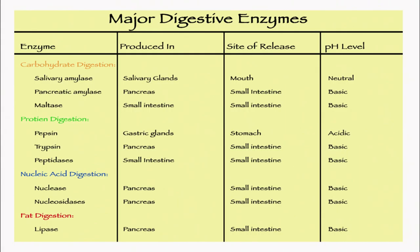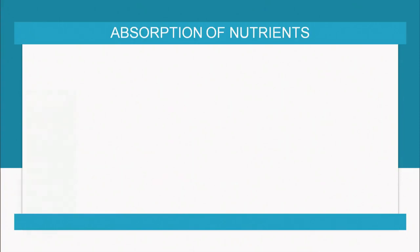This is a summary of the enzymes — where they are produced, their site of release, and the pH required for their activity. Except for the stomach, at all other places the pH required for the activity of enzymes is basic.